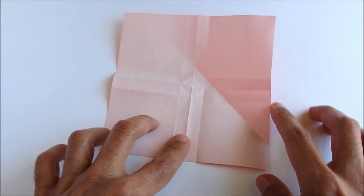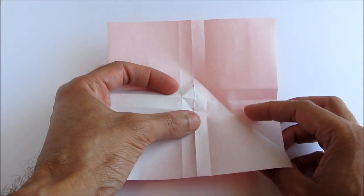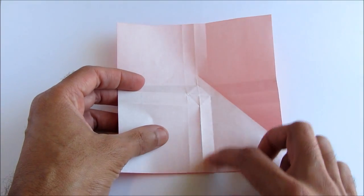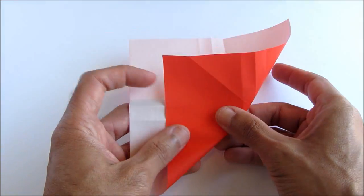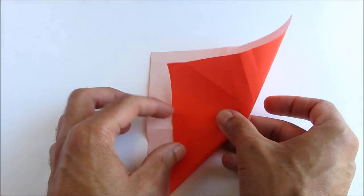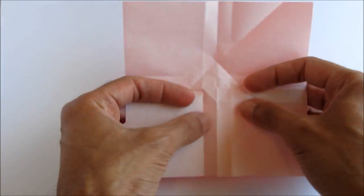Rotate the paper 90 degrees, and we're going to repeat the same thing. This fold here is going to go across to this fold. And we're going to do that two more times.